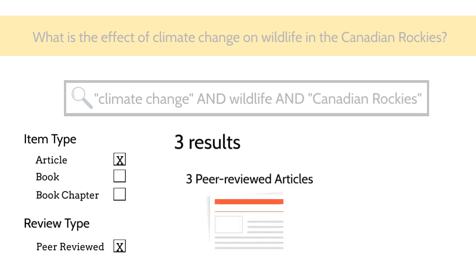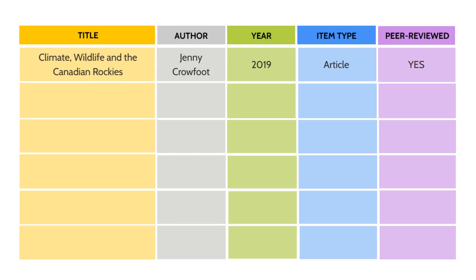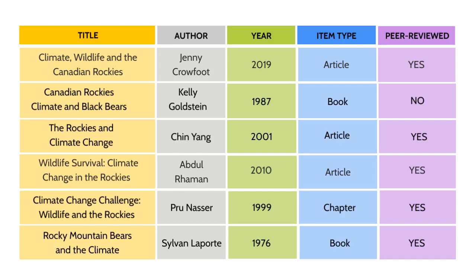How does this happen? Just like in your phone contacts and Joe's online tent store, the library has a database in the background, where sources are organized and labeled into fields like title, author, year, item type, peer-reviewed or not. And into records, one for each item in the library. When you conduct your search using keywords and then limiters, the database matches them to the records that meet your criteria.